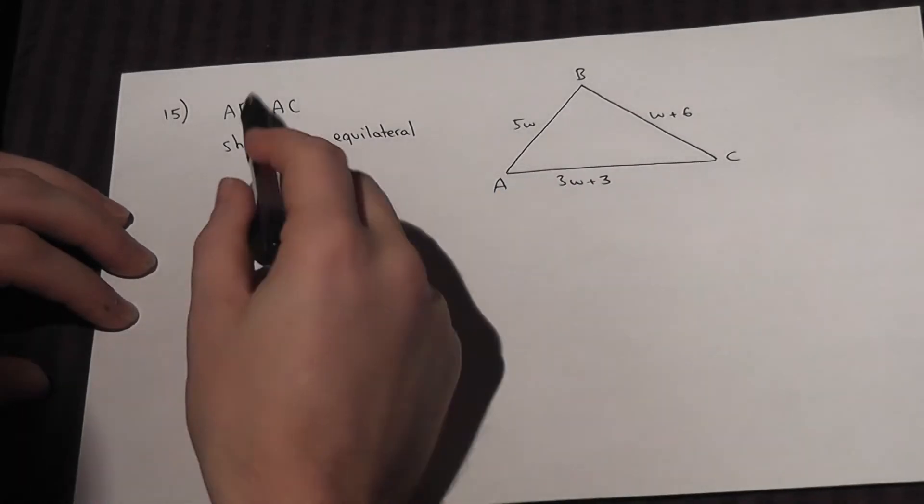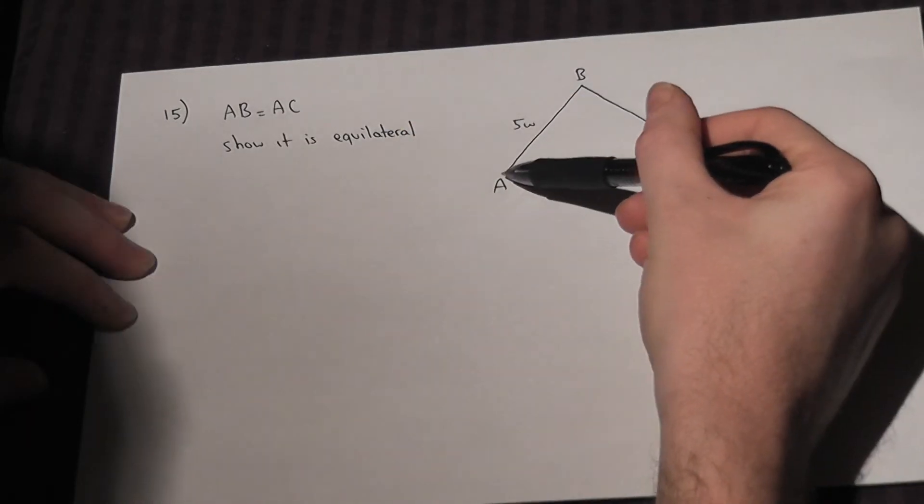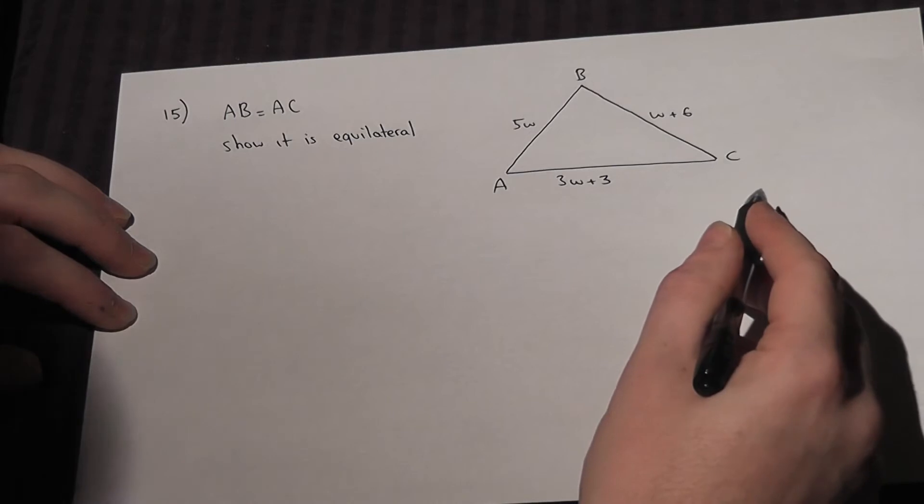In this question we're told that AB equals AC, which means that that length equals that length. We can therefore set an equation up.